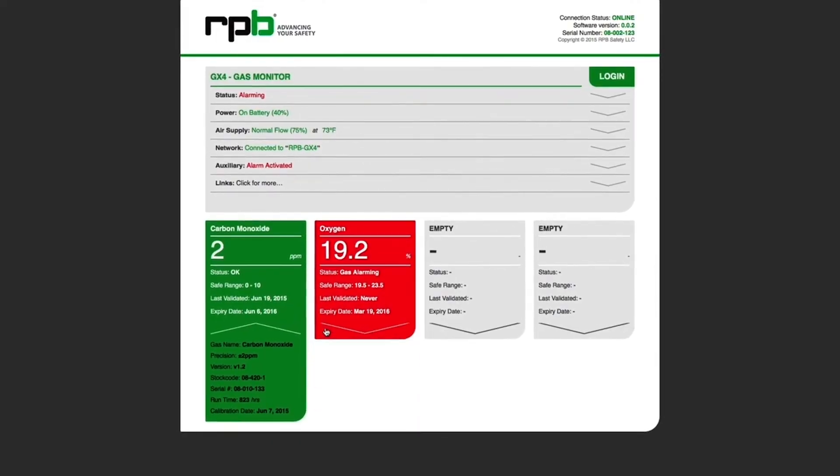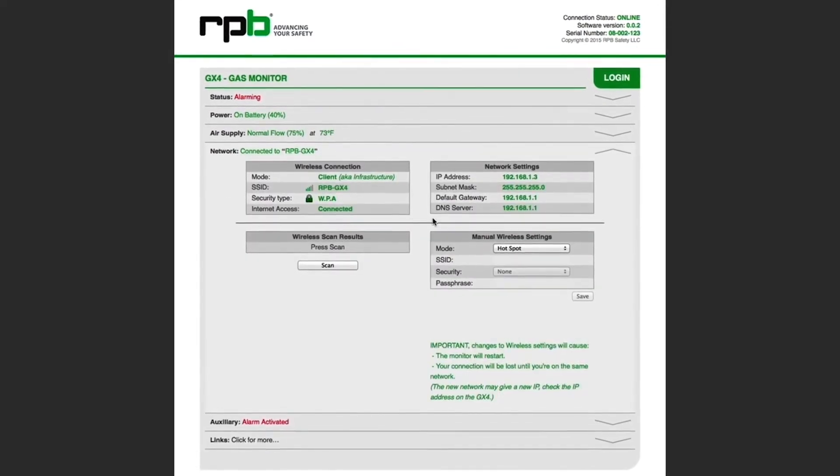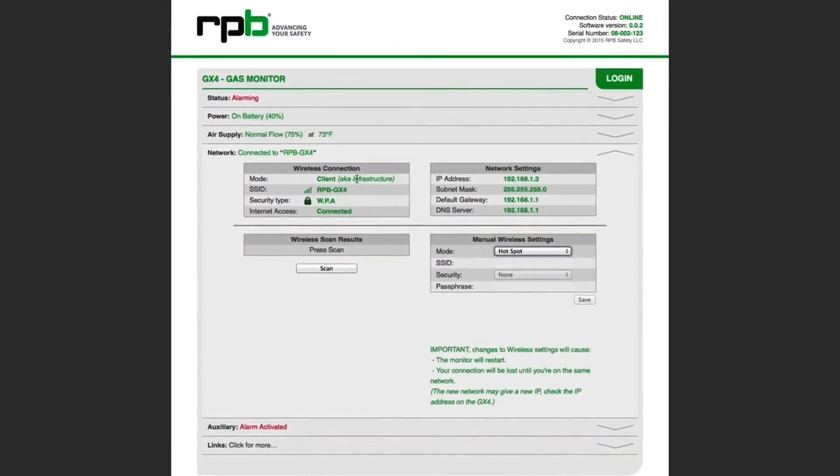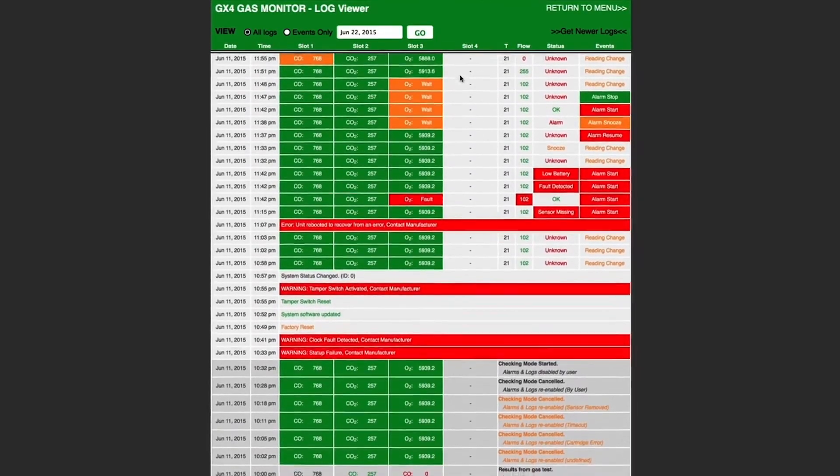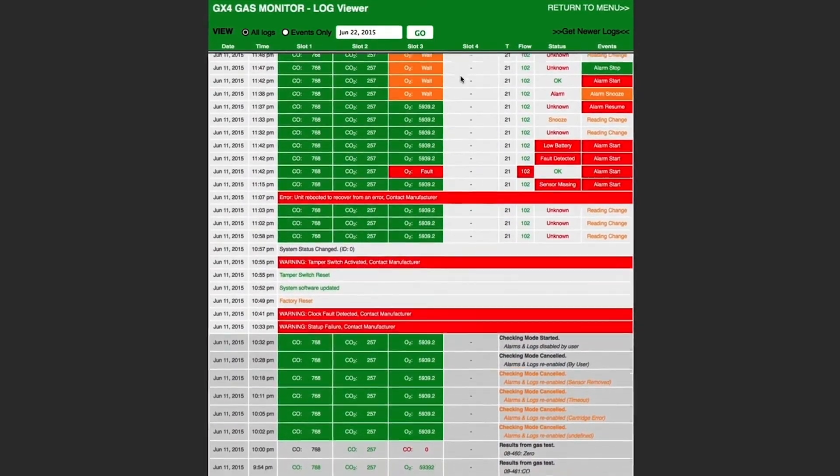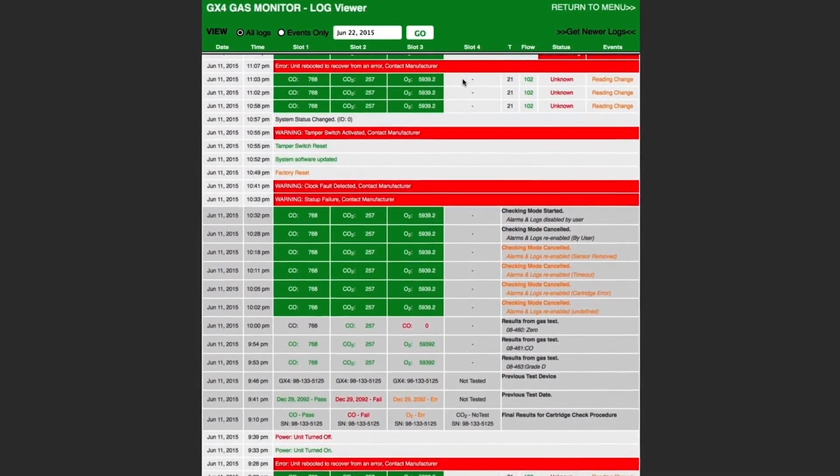To view the GX4's real-time and log data, simply log in to the unit's built-in Wi-Fi hotspot on your smartphone, tablet, or laptop. Alternatively, connect your GX4 to a network and access the data from any device connected to that network, even if you are off-site.